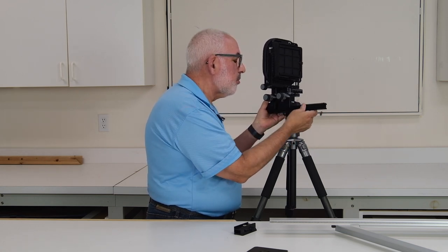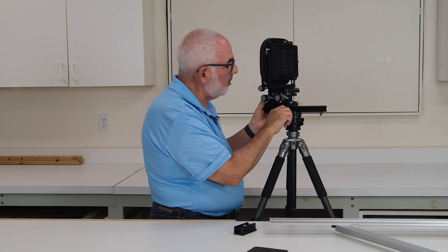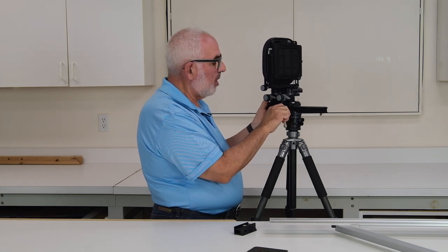I'm just going to put this in here. Make sure it's out all the way. Lock it down. And you can slide this back and forth to the center depending on how much bellows you're using. Okay, now it's locked in.